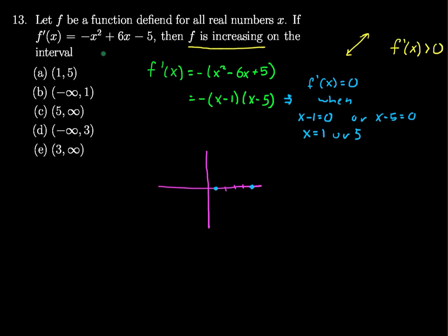I can just look at this function, I see I have a negative leading coefficient, so I know that my parabola has to be opening downward, and I can see it right away from that.